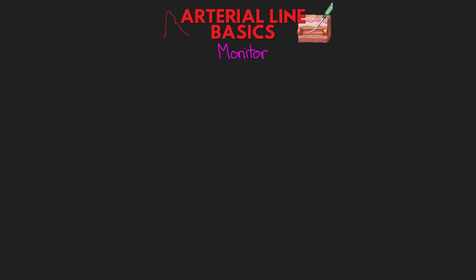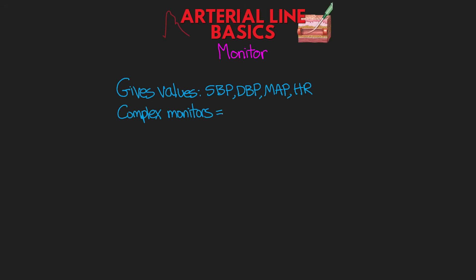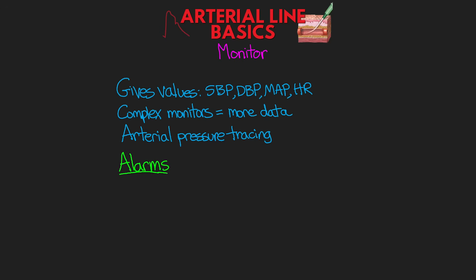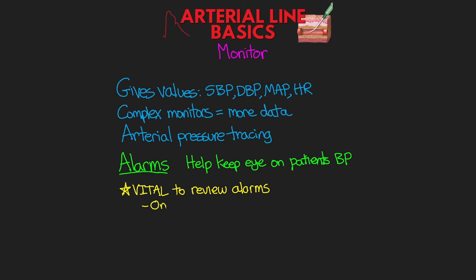Finally for this lesson, I want to talk about the monitor when it comes to our A-lines. The monitor is what gives us all of our values — we're going to get our systolic blood pressure, diastolic blood pressure, mean pressure, as well as our patient's heart rate. We can also have the A-line attached to more complex monitors, such as the FloTrac, which can give us even more data, but I will save that for a future lesson. In addition to our values, we're also going to be shown our arterial pressure tracing — in the next lesson I'm going to do a deep dive specifically into this topic. The big thing with the monitor is going to be our alarms. Every monitor has very helpful alarms to help us keep an eye on our patient's blood pressure. It is absolutely vital that you review these alarms at the beginning of your shift and ensure they are on and appropriately set.